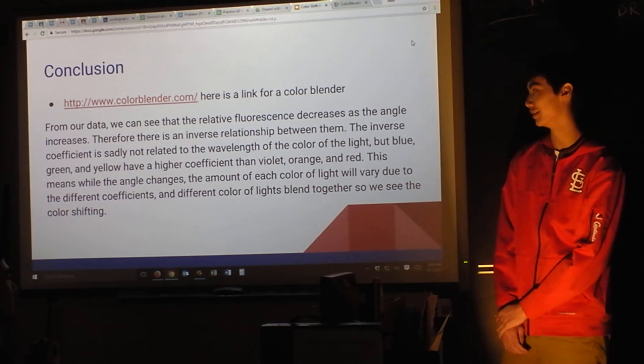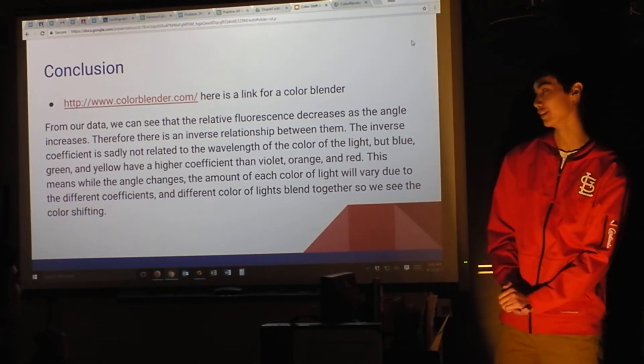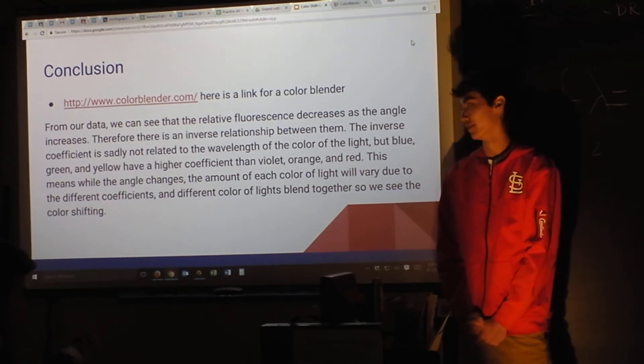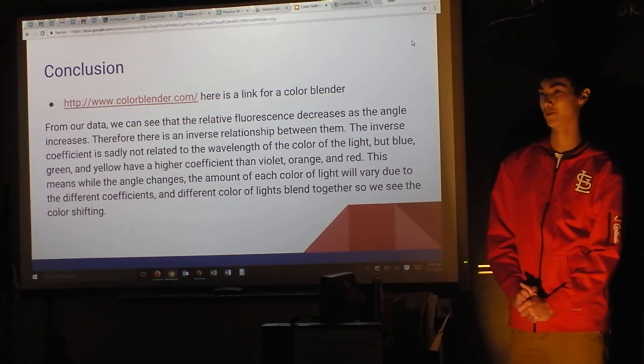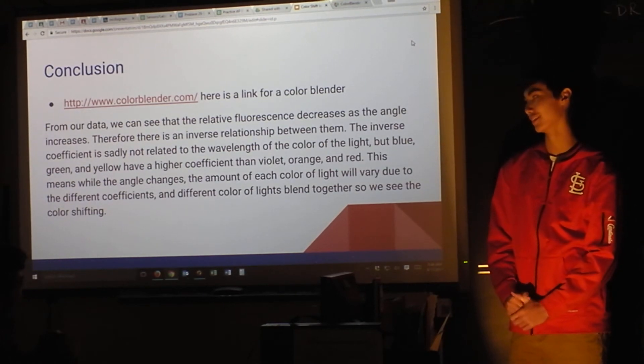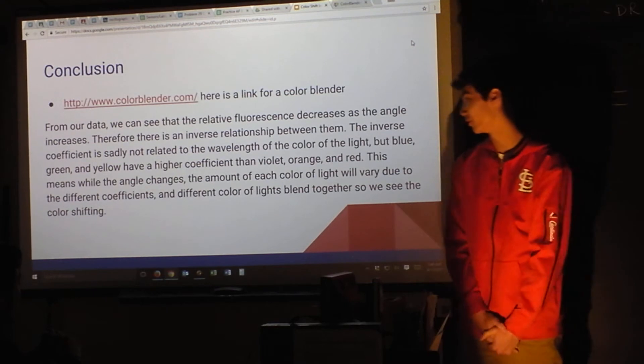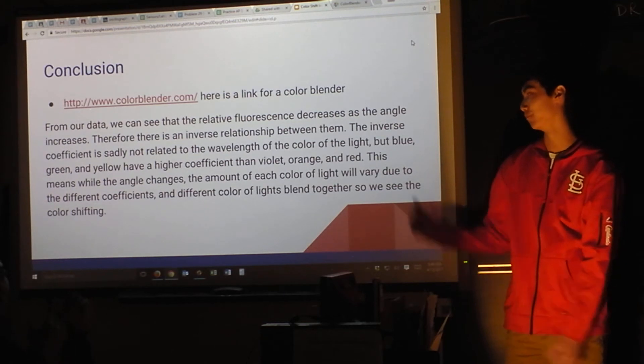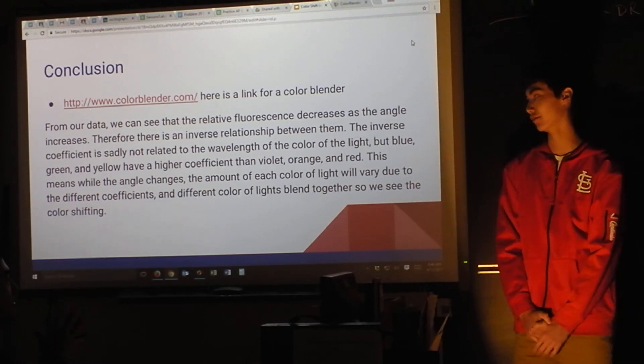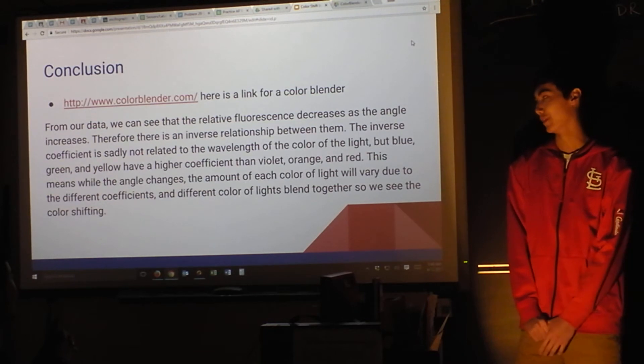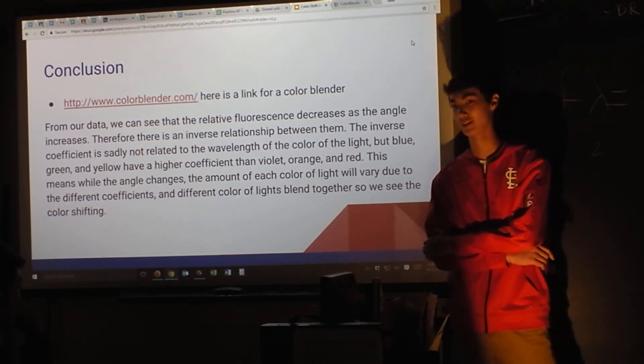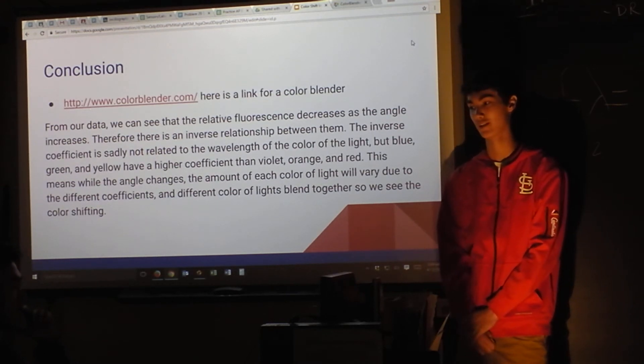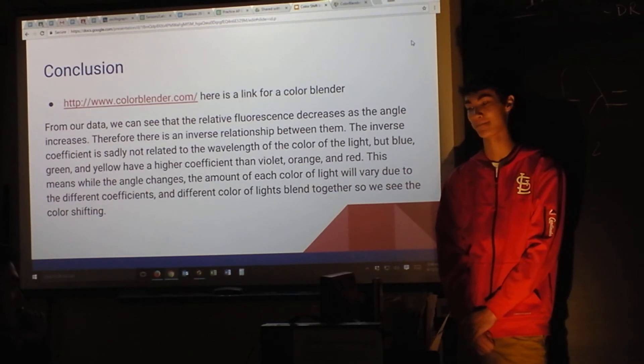And then just to wrap it up, we saw an inverse relationship between the fluorescence and the degrees, the angle. And the coefficients we found weren't really related to the color. Because three of them is higher, three of them is lower. We had blue, green, and yellow had higher coefficients than violet, orange, and red. And basically, it just means the color will vary at each angle based on those coefficients. That's basically what we discovered. That's it. Thank you.